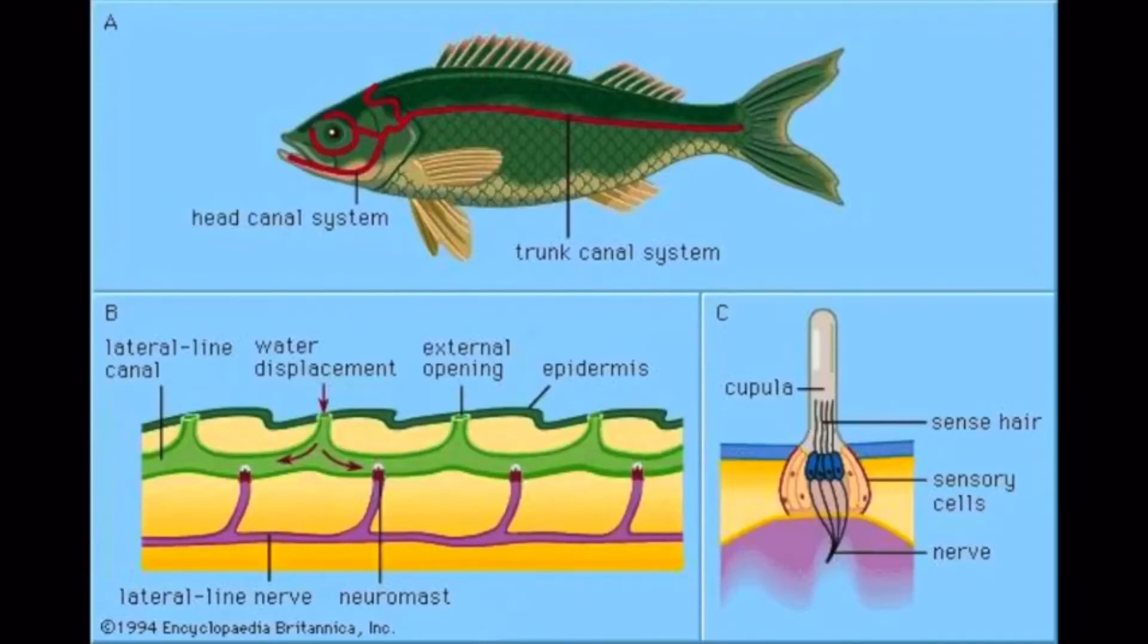Lateral lines are composed of many small structures called neuromasts. Neuromasts are described by Horst Beckmann as a sensory structure that consists of a hair cell epithelium and a cupula that connects the ciliary bundles of the hair cells with the water surrounding the fish.